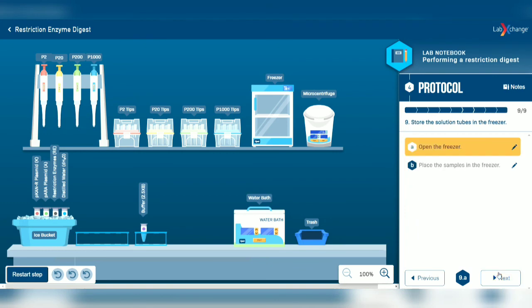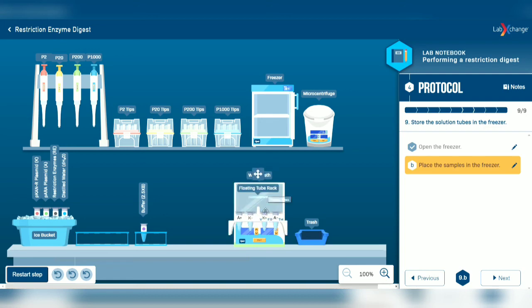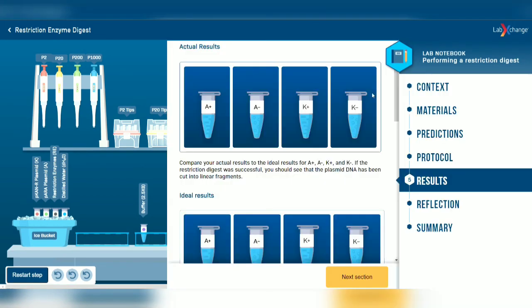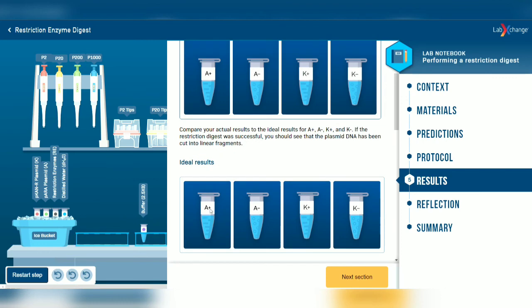After one hour, open the freezer, then open the water bath and take the tube rack to the freezer. Close the freezer door. This is the result we get from this experiment. By comparing our result with the ideal result, we can see there is no difference. That means we completed this experiment successfully.